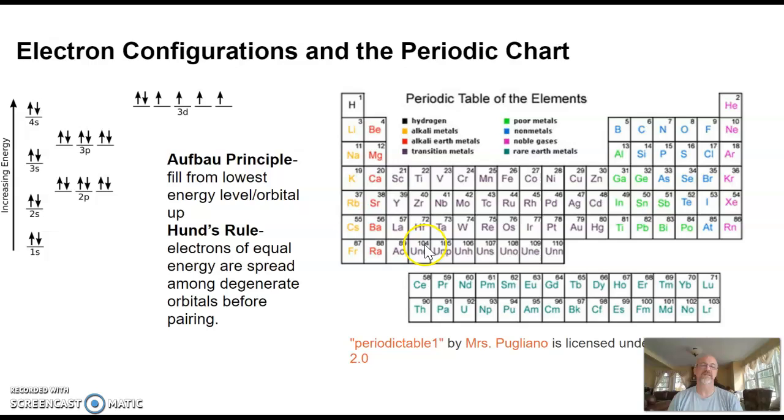The d-block is the section in the middle here. These elements correspond to d orbital electrons, but they're one energy level behind the period they're in. Notice here I get 4s1, 4s2 for calcium, and then scandium is 4s2 3d1.